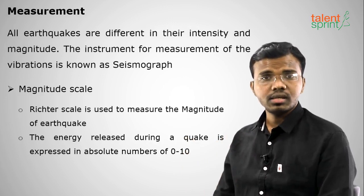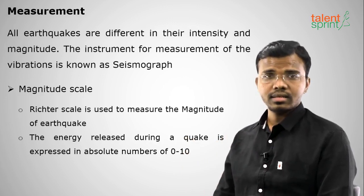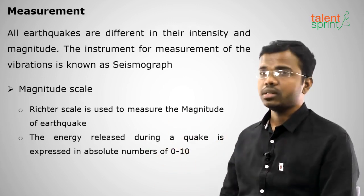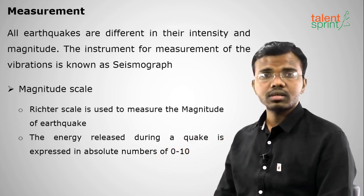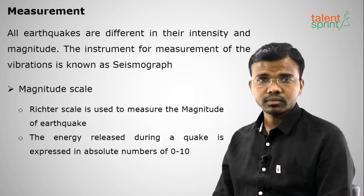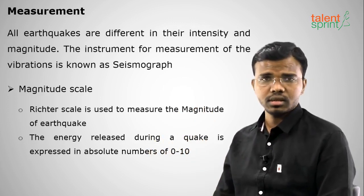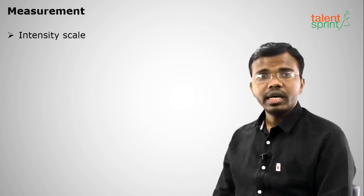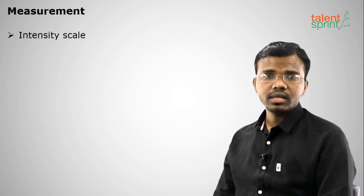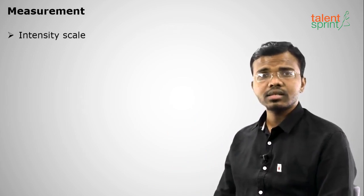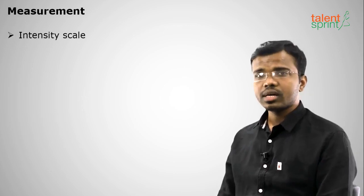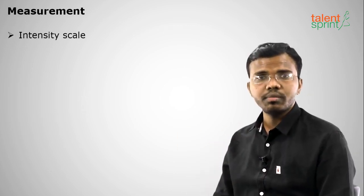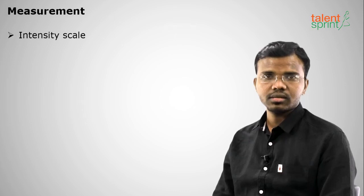Generally, above 7 on the Richter scale is highly destructive in nature. It is calculated on a scale of 0 to 10, and above 7 is considered more destructive. The next scale is the intensity scale. After the earthquake has happened, how much destruction it causes to human beings and other life — this is called intensity.